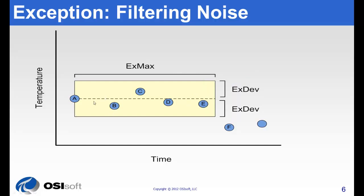The PI tag attributes that define exception are exception max, which defines the length of time we'll go before we, for sure, report a value, and exception deviation, which defines the width of this dead band.